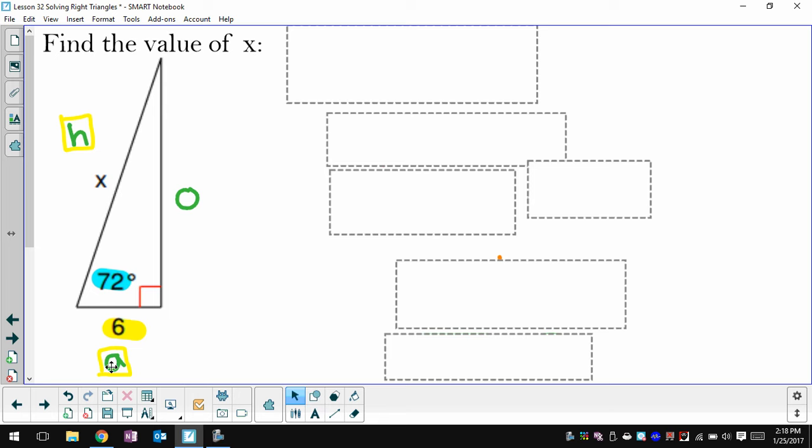You'll notice that my h and my a, I put a little box around them. That's because I have a value for each of those lengths. My adjacent side is 6, and my hypotenuse is x, which is what I'm looking for. So since I know something about a and h, I'm going to use the cosine relationship. So the cosine of my angle, which is 72, is equal to the adjacent side 6 over the hypotenuse x.